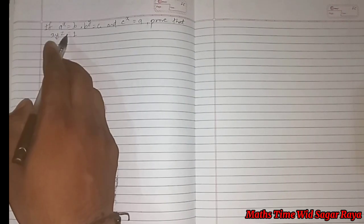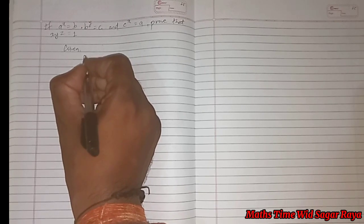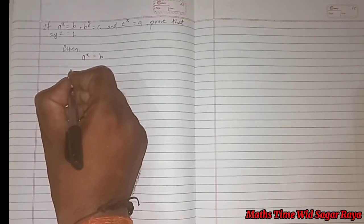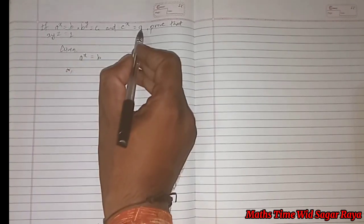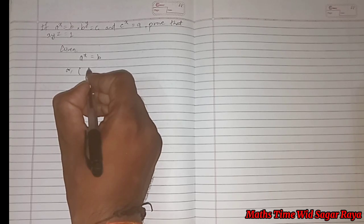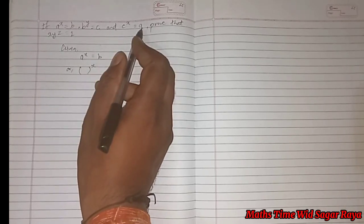So what is given here? A power x is equal to b, right. So here, value of a is c power z, so instead of a we can write c power z.